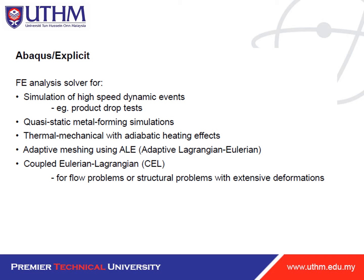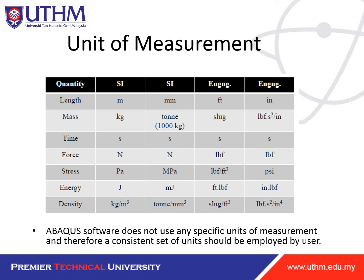You can go to the Abaqus manual to study Abaqus Standard and Abaqus Explicit in more detail. Regarding units of measurement: Abaqus software does not have any specific units, so a consistent set of units must be employed by the user. You must be very careful — most errors and inaccurate results are due to unit of measurement mistakes. There are four unit categories: meter, millimeter, feet, and inch.